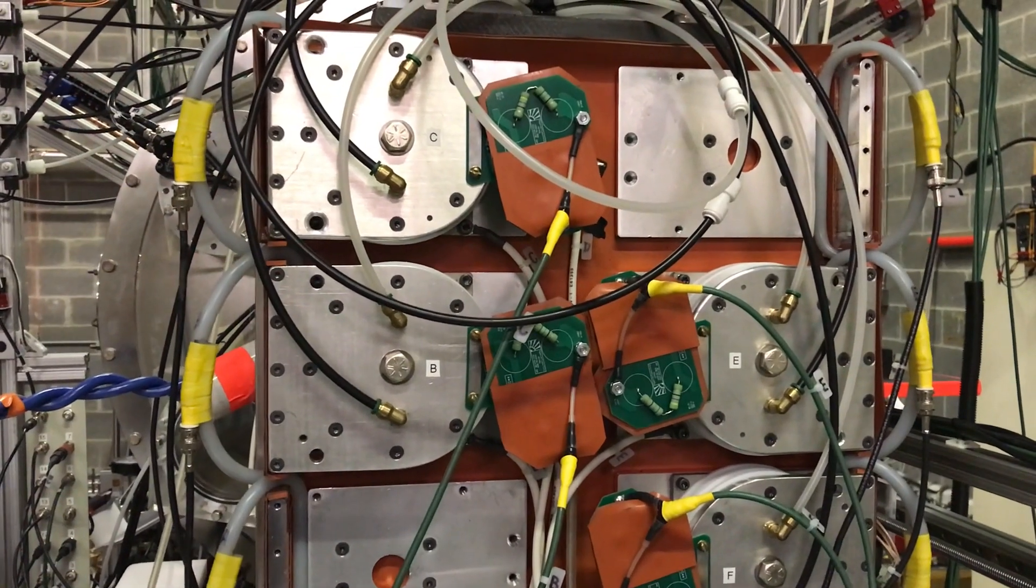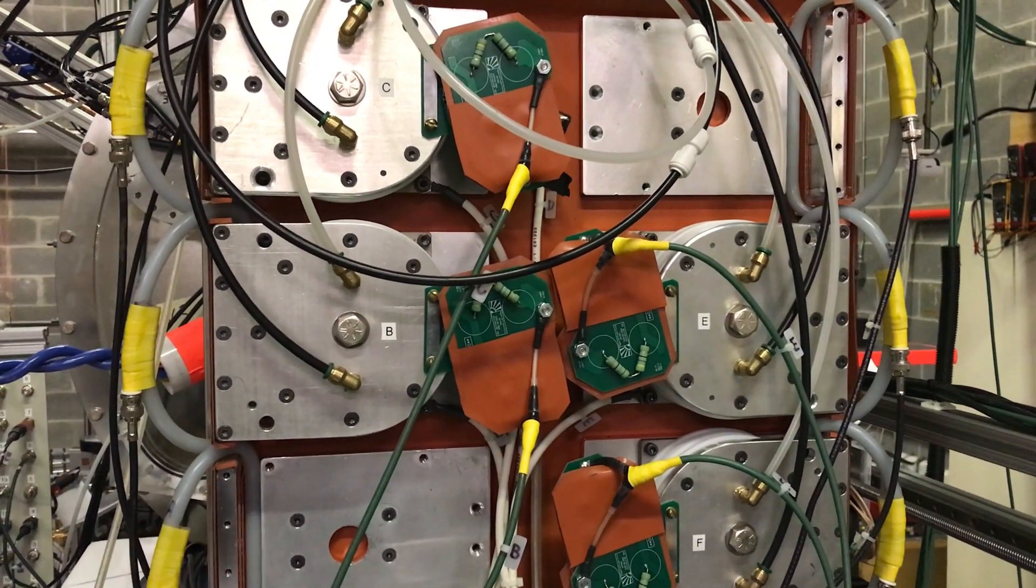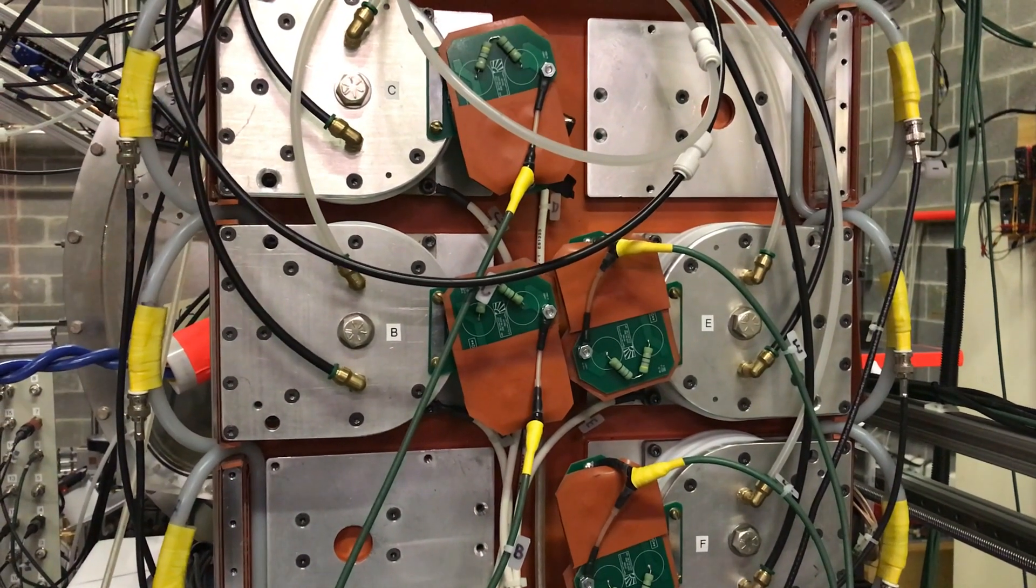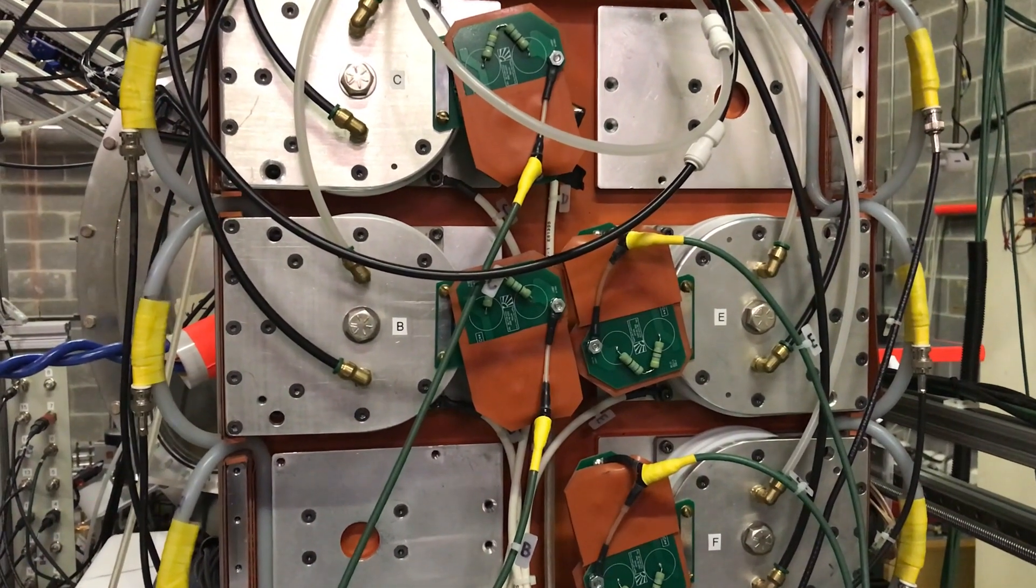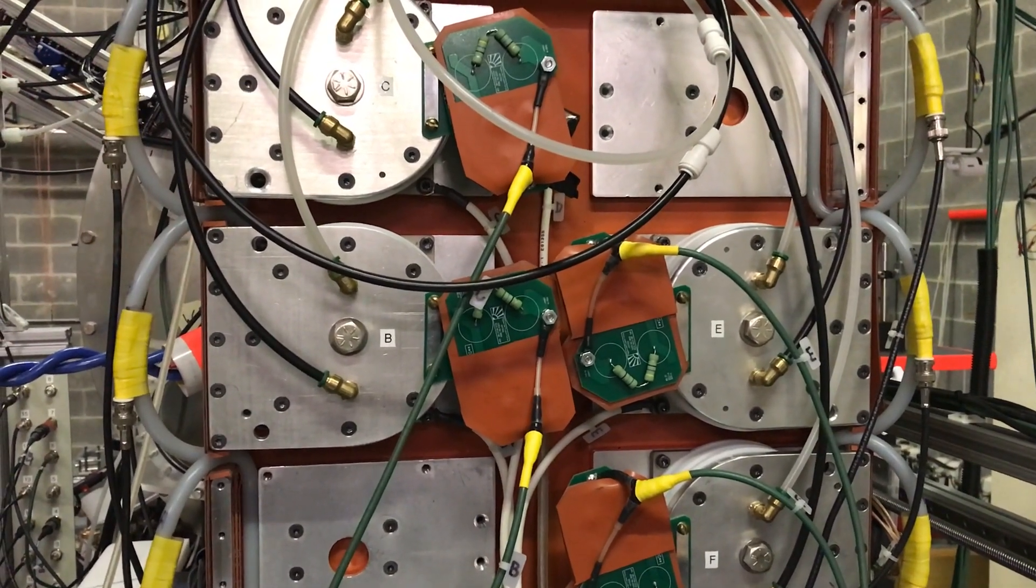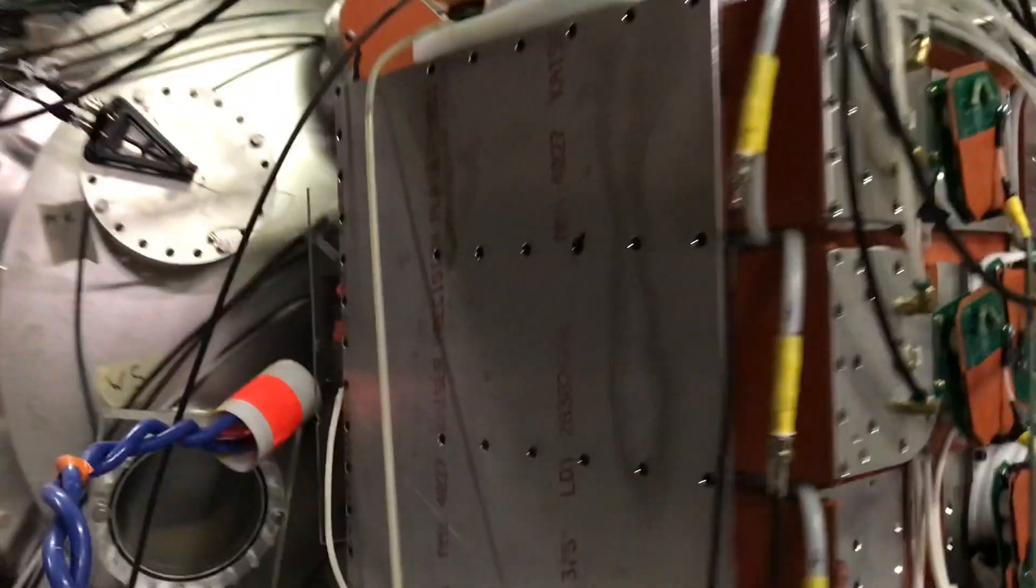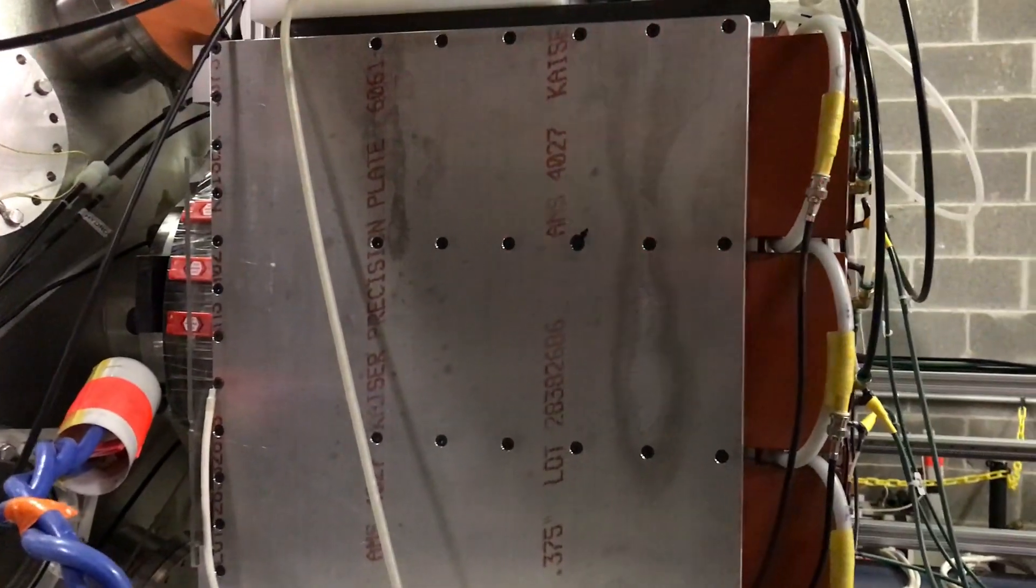And so these are special spark gap switches, which basically use a spark of electricity to close the switch to release about 7.5 kJ energy pulse from the capacitor bank which is inside this silver box on the gun.